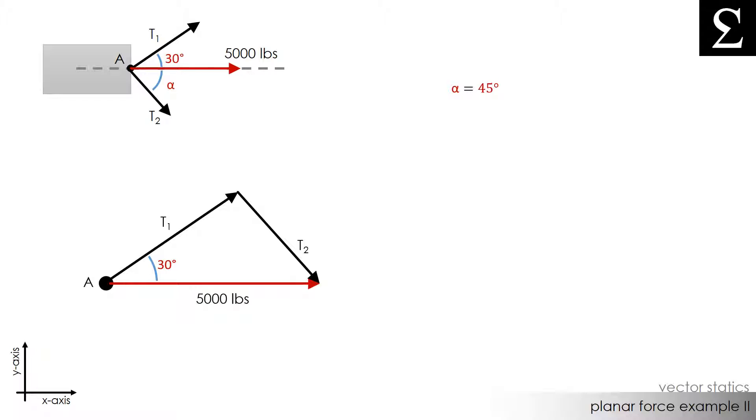We know this angle here is 30 degrees. We also know that this angle here is 45 degrees. Since the resultant force is horizontal, that must mean that this angle here is also 45 degrees, because the two 45-degree angles are equal and opposite angles. Now that we know the two angles of the triangle, we can calculate this angle to be 180 degrees minus 30 degrees minus 45 degrees. This angle is calculated to be 105 degrees.